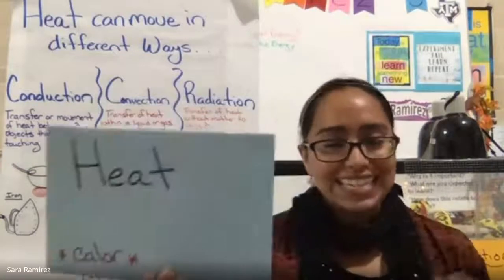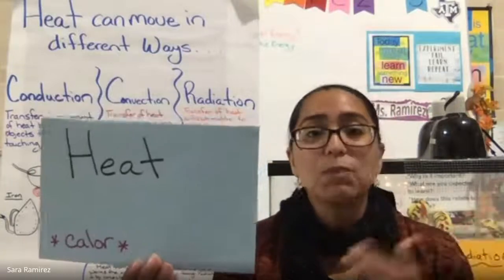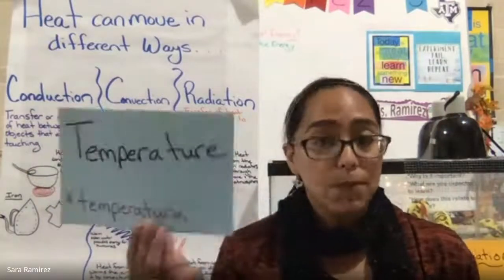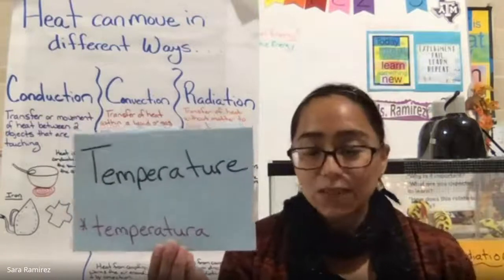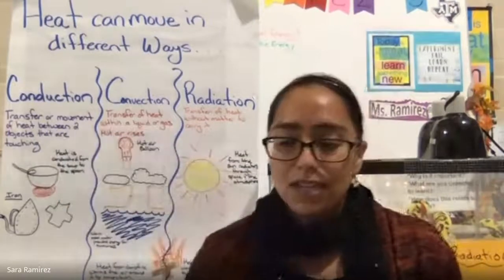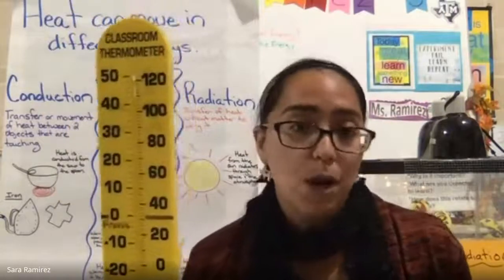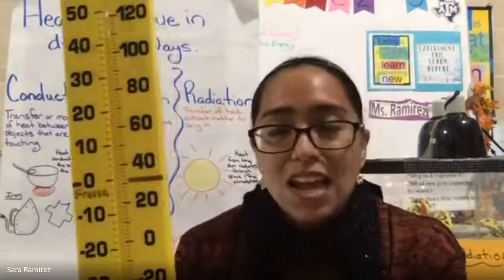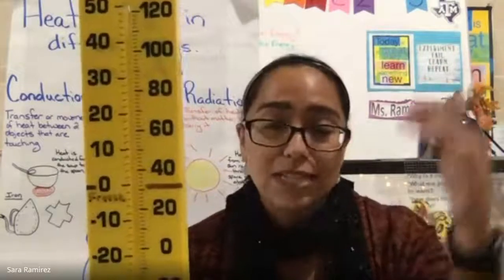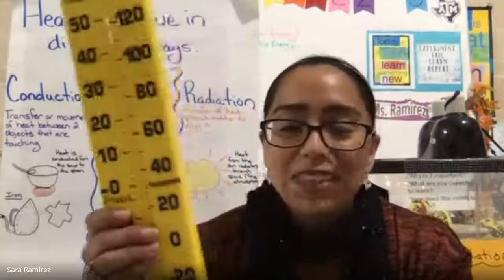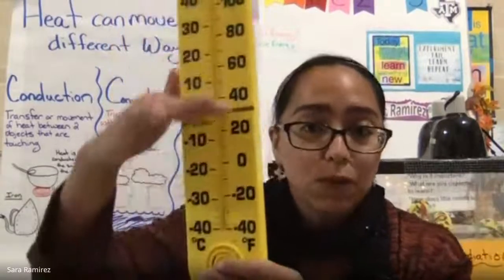Heat is the transfer of energy — it describes the movement of energy, and generally heat moves from warmer things to cooler things. We can use a thermometer to measure temperature. The scientific definition of temperature is the measurement of the average kinetic energy of particles in a substance. Inside the thermometer is a red liquid: when heated, the particles' kinetic energy increases and the liquid expands and rises. When it cools, the liquid contracts and drops.